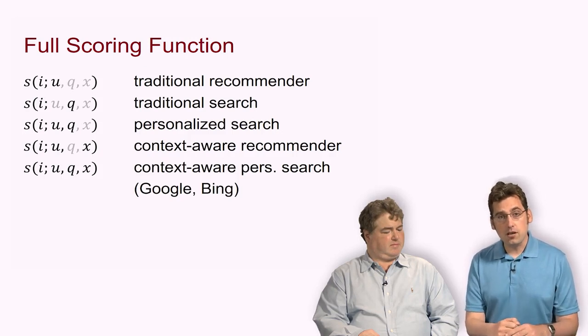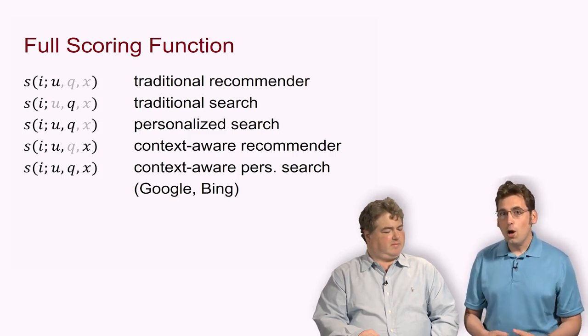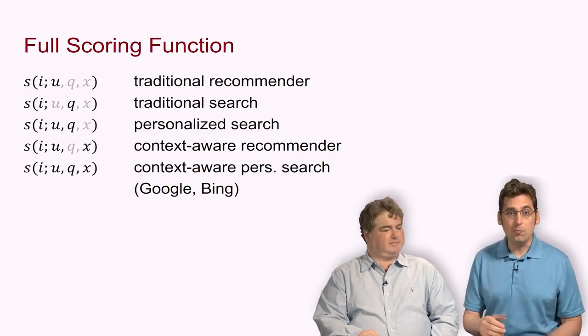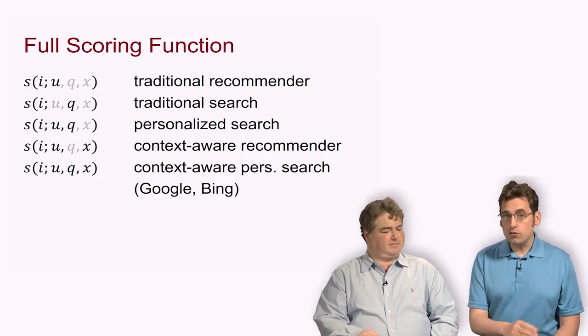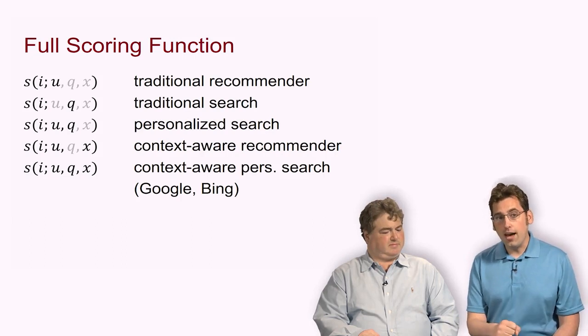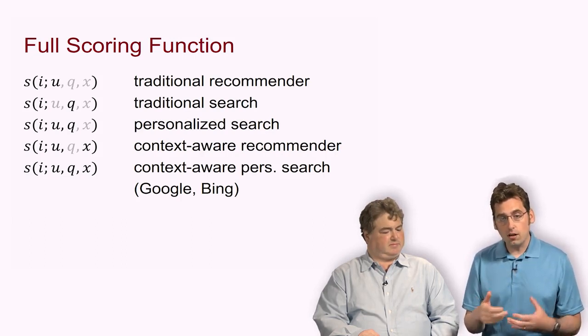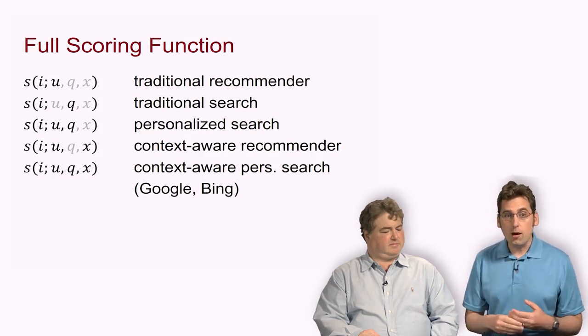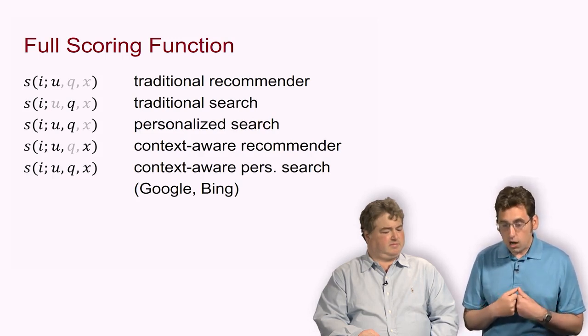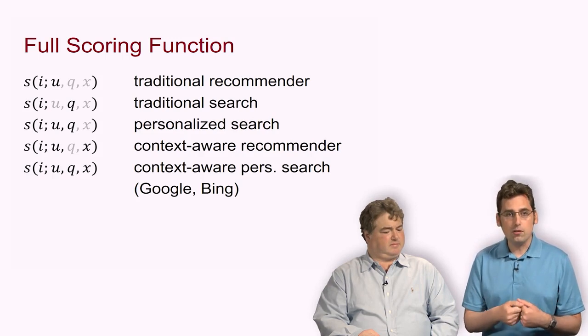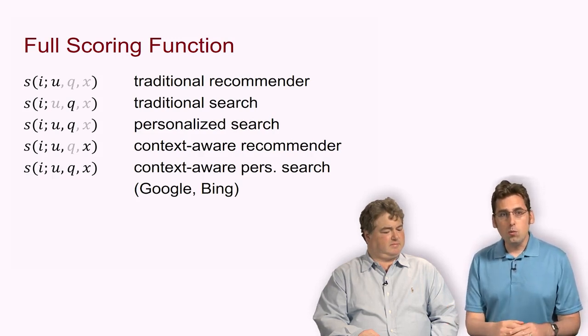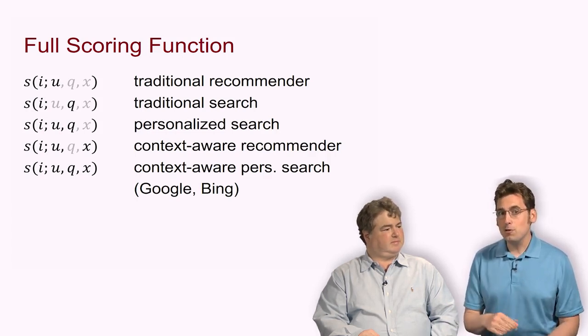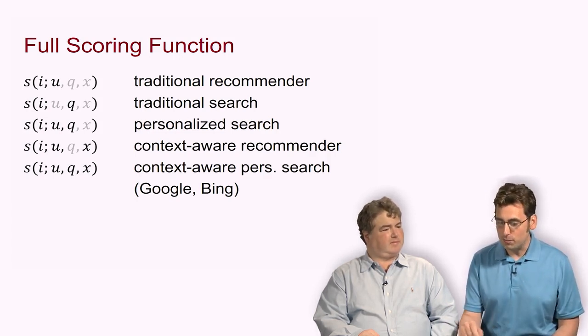Context-aware recommendation takes into account the user and some context attribute, such as currently at the theater, so recommend movies that are on one of the 12 screens. And finally, some systems take into account all of these: context-aware personalized search, which is what you get by default using major search engines today such as Google or Bing. When you search for lunch, it will prefer restaurants that are near you and are consistent with your previously expressed preferences and behavior.